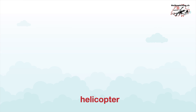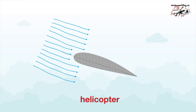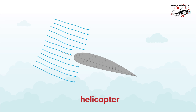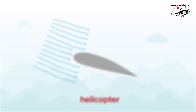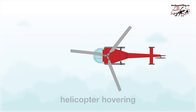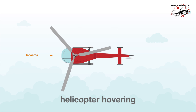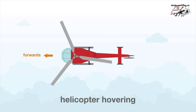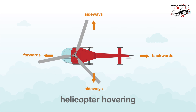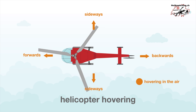This happens because the angle of incidence and angle of attack of all of the rotor blades increases simultaneously. The constant rotation allows helicopters to fly forwards, sideways and backwards, or hover in the air.